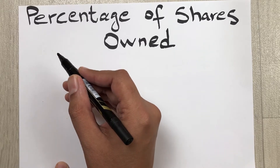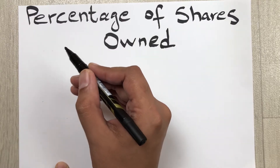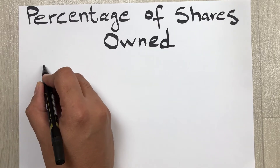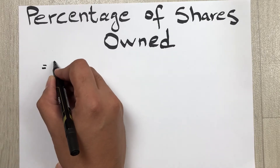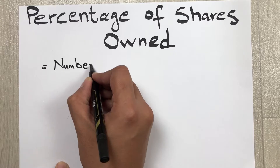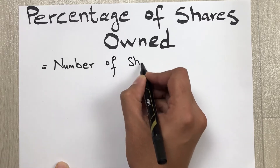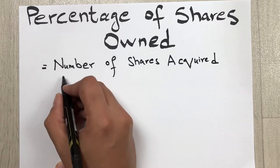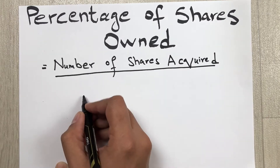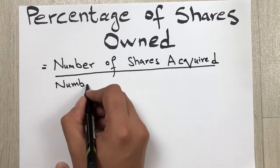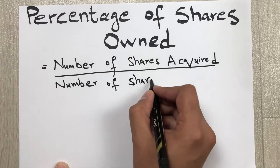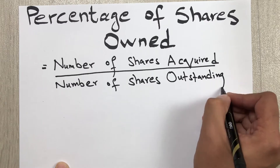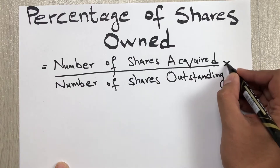Hello guys, I hope you are doing really well. In today's video, I am going to show you how to calculate the percentage of shares owned. The formula is: number of shares acquired divided by number of shares outstanding, multiplied by 100.